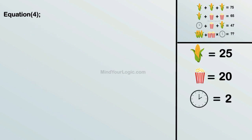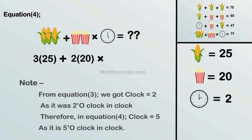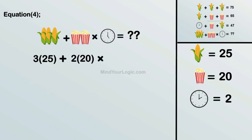Now solving the final equation: 3 corn plus 2 popcorn plus clock equals question mark. Substituting clock equals 5, as it's a 5 o'clock clock in the equation. On solving the equation, we get the value of the final equation as 275.